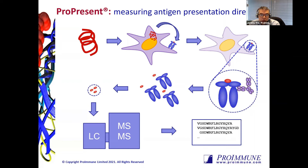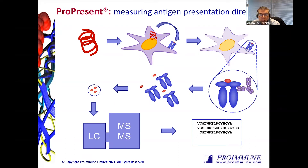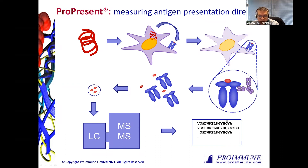We then perform a lysis step of the dendritic cells and immunoprecipitate the MHC class 2 molecules on the surface using an HLA-specific antibody. We have antibodies against HLA-DR, DP, and DQ, so we can pull these different loci down either in series or one by one, depending on what you're looking for. Following isolation of these MHC peptide complexes, we do an elution to elute the peptides from the groove, and then these peptides are run through LC-MS/MS sequencing to identify the exact sequences presented in the context of class 2.